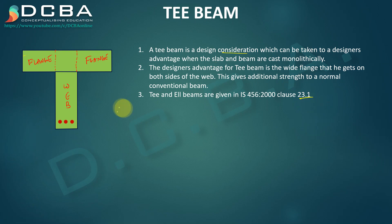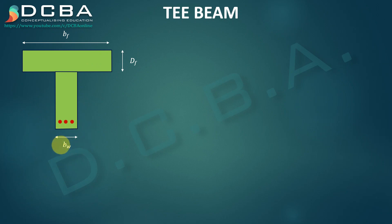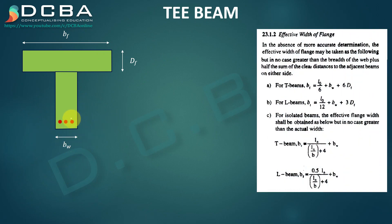Please read IS 456 clause 23.1. Some terminologies relating to T-beams: first, the width of the flange is called bf; second, the depth of the flange is called df; and the width of the web is called bw. IS 456 tells us something about the effective width of flange — if a T-beam is given to us, the entire flange is not going to be effective in bending; only a part of it will be effective, calculated using these formulas.